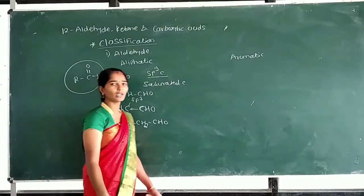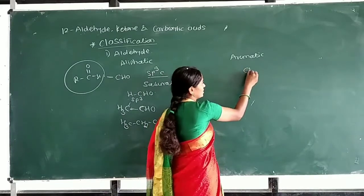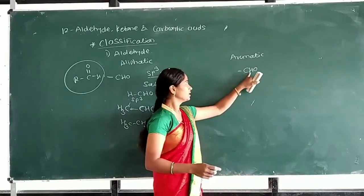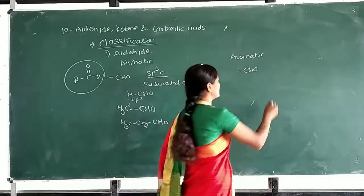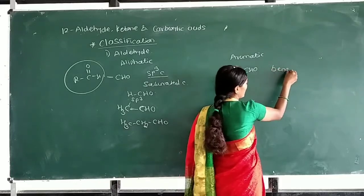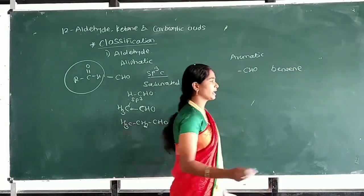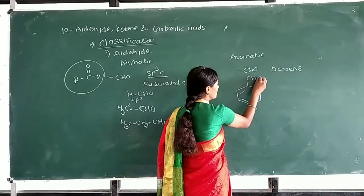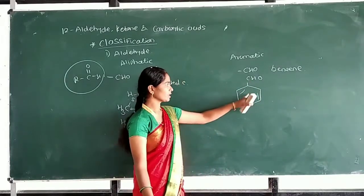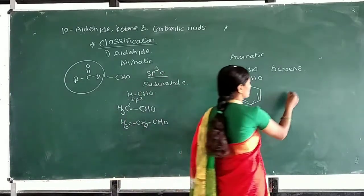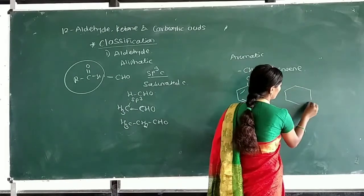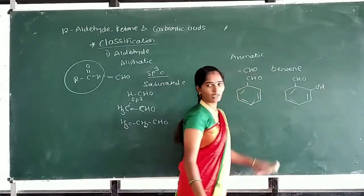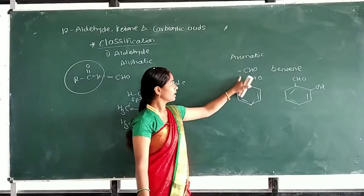In aromatic aldehydes, the formyl group is directly attached to a benzene ring. For example, a benzene ring with a CHO group attached is called benzaldehyde. This is an example of an aromatic aldehyde.